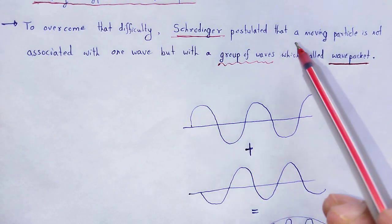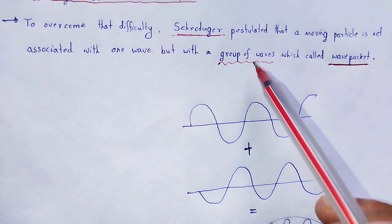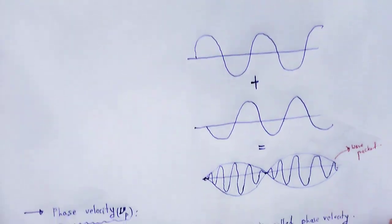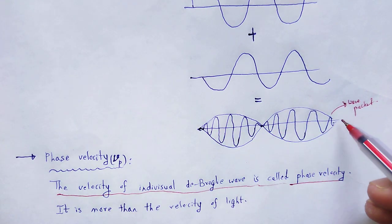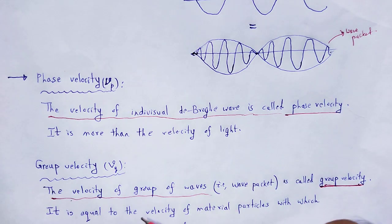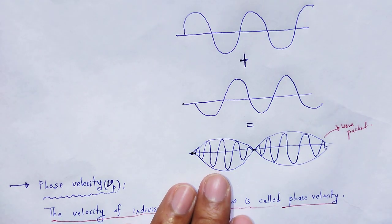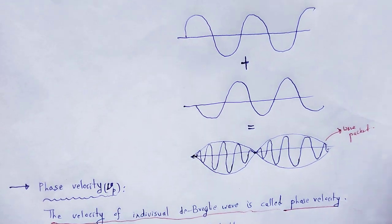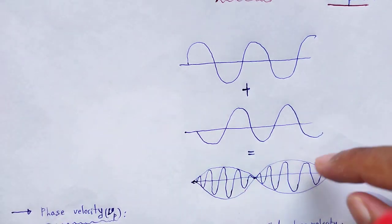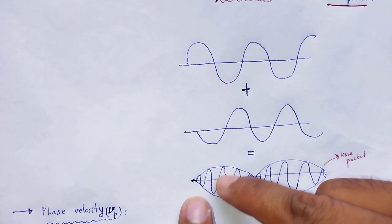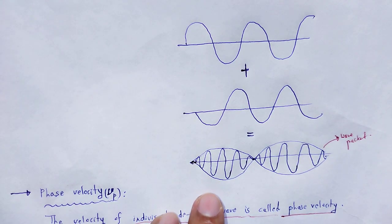According to Schrödinger, the moving particle is not associated with a single wave; it is a combination of a group of waves called a wave packet, and the velocity possessed by this group of waves we call group velocity, that is v_g. In that figure, to calculate phase velocity and group velocity, we consider two waves. These two waves are superimposed with each other and form a wave packet, which is a group of waves, and let us figure out what the phase velocity will be.